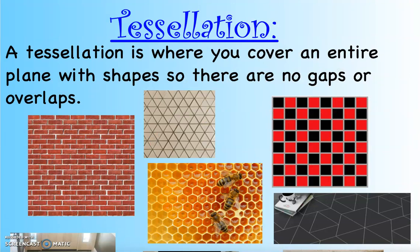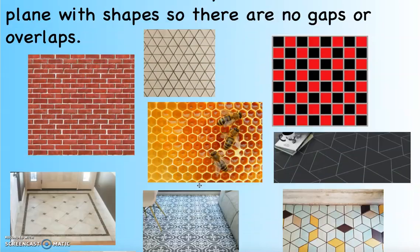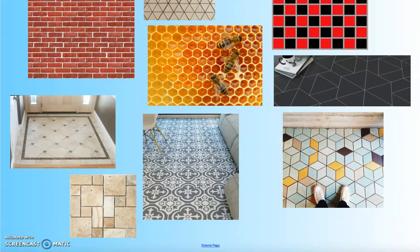Again, we have this definition of a tessellation. It's where you cover an entire surface with shapes so there are no gaps and no overlaps. And we see tessellations all the time in the real world. Brick walls - these are tessellated rectangles. Tiled floors - these are some tessellating triangles. A checkerboard, tessellating squares. A beehive - it's a really great natural example of tessellating hexagons.